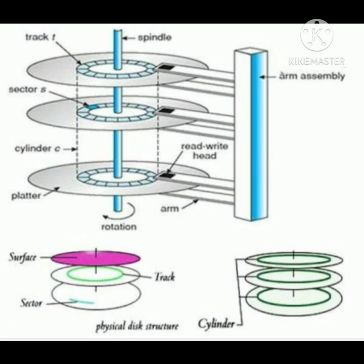Read and write operation means input and output operation. The hard disk uses electromagnetic recording heads to perform input and output operations. There is one head for each surface and all the heads move together. Each disk has rotating head pins that are used to perform the read and write operation. When the disk is rotating, the rotating heads perform either read or write operation. The hard disk has several disks.